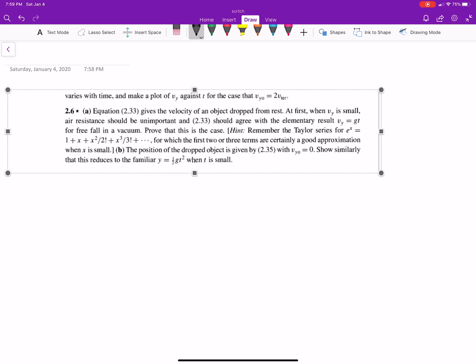Prove that this is the case. It gives us a little hint about Taylor series. We're going to have to use Taylor series from calculus to help us solve this problem, which we'll review if you don't remember that. The first two or three terms are a good approximation when x is small, and when the position of the dropped object is given by equation 2.35 with the initial velocity being 0, so similarly that it reduces to y equals one half g t squared.